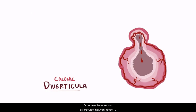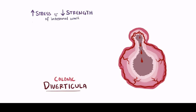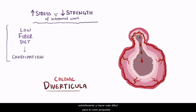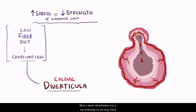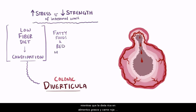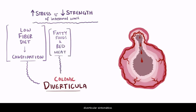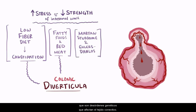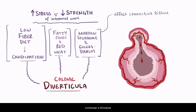Other associations with diverticula include things that either increase the stress on the walls of the intestine, or decrease the strength of the intestinal walls. Fiber helps stool move more easily through the colon, so diets low in fiber can lead to constipation and make it harder for the colon to move small, hard stool. Dietary fiber is associated with a decreased risk of symptomatic diverticular disease, and a diet high in fatty foods and red meat is associated with an increased risk. There are also genetic causes of diverticula, like Marfan syndrome and Ehlers-Danlos, which are genetic disorders that affect connective tissue. Without strong connective tissue supporting the colon wall, diverticula can begin to form.